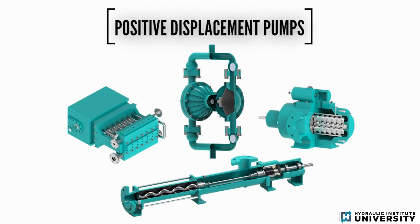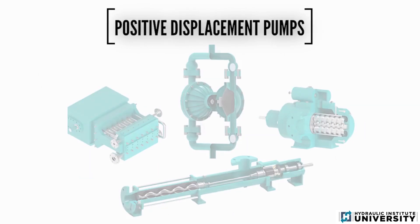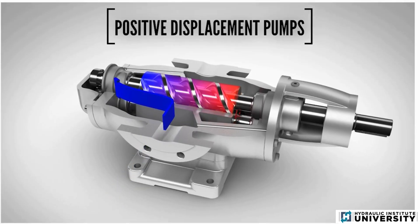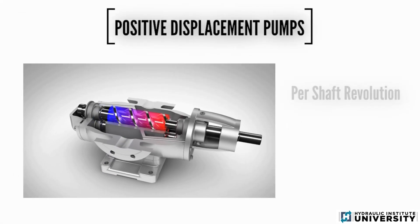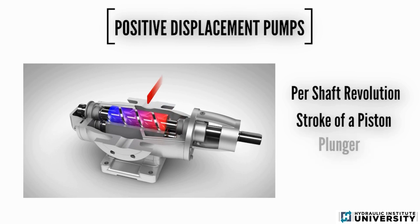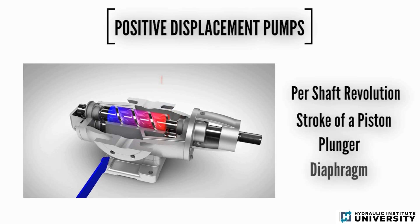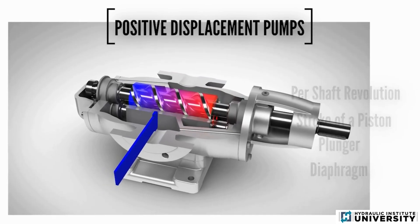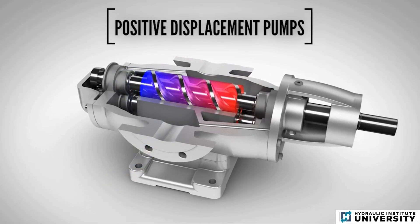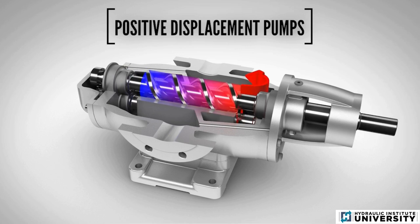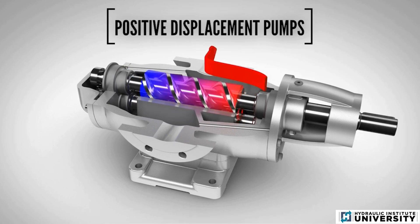Positive displacement pumps differ from rotodynamic pumps in that they deliver a volume of fluid from the suction side to the discharge side of the pump per shaft revolution or stroke of a piston, plunger, or diaphragm. They add energy to a system or process by trapping and forcing the fluid through the pump.